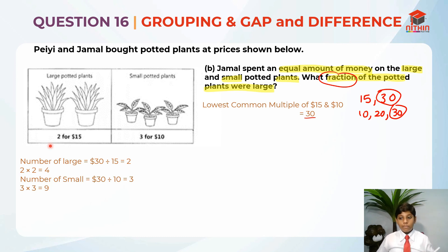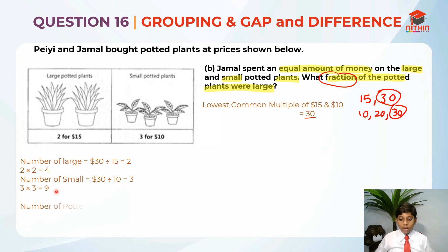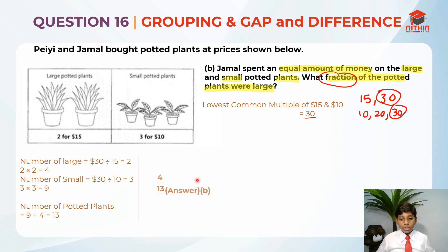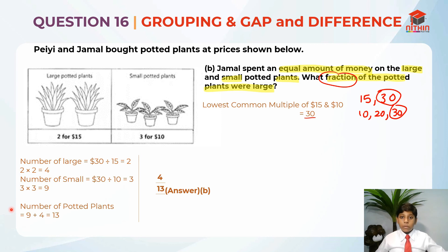Since we should always leave our answer in simplest form for a fraction, now that we have the number of large (4) and small (9), the total number of potted plants is 4 + 9 = 13. The fraction of plants that were large is 4 over 13. That is the answer for part B. Thank you, and I hope you understand the explanation for parts A and B of question 16. See you next time!